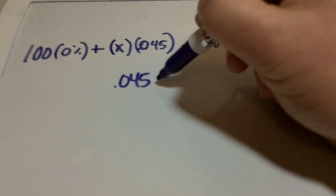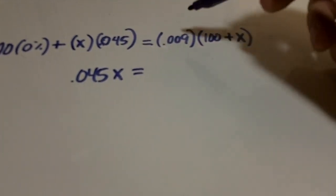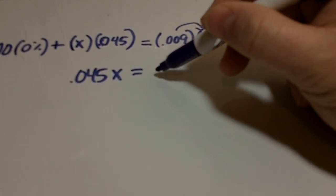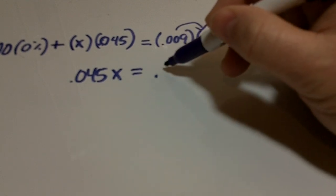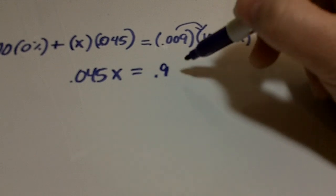And then we'll go ahead and distribute. We have 0.009 times 100, which is—I should have calculated this ahead of time—I think it's 0.9, and then plus 0.009x.